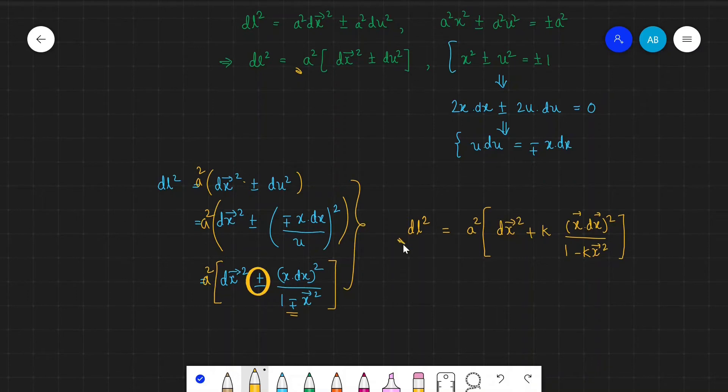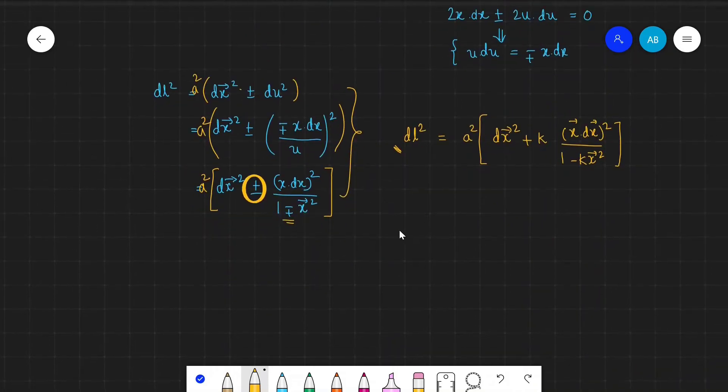Now it's good if we write this line element in polar coordinates, that is r, theta, phi. To do that, we simply put dx² equals dr² plus r² dθ² plus sin²θ dφ², and x dx equals r dr. You'll find these definitions in any geometry book.